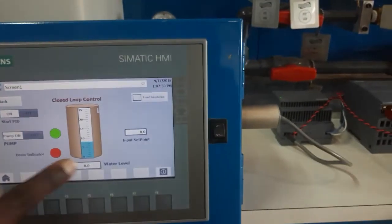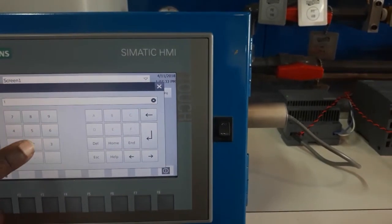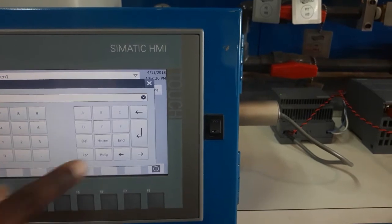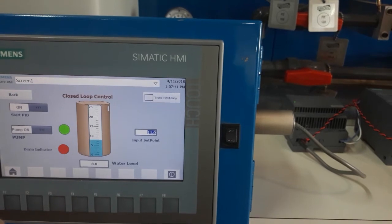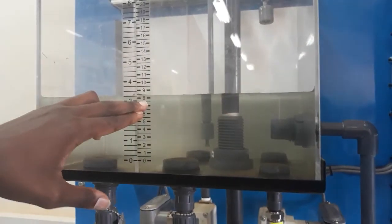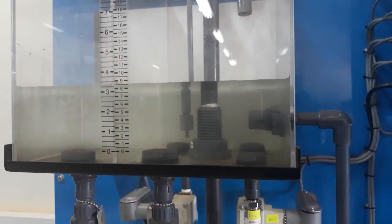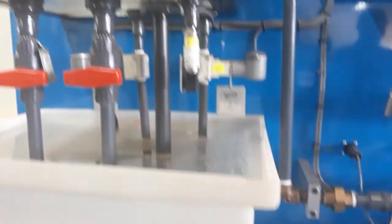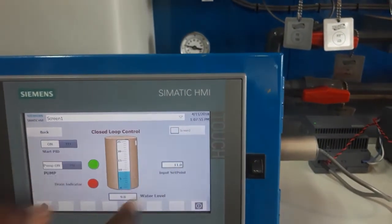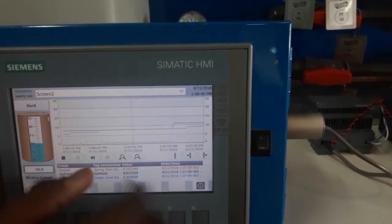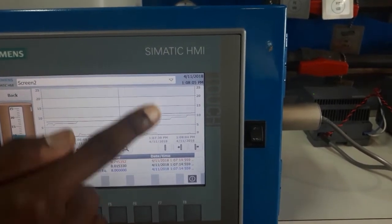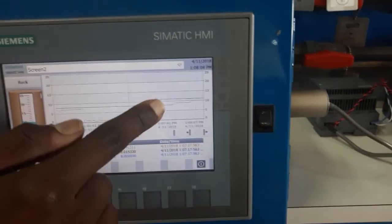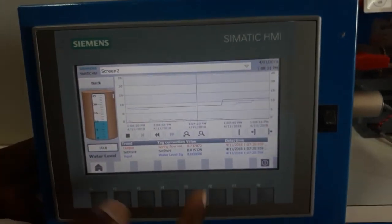Then I can change the setpoint from 8 to 12, or to 11. Then the system realizes that the setpoint has been raised to 11, and it raises the water level from 8 to 11, as it tries to maintain the water level at the new setpoint. You can go ahead and look at the trend. From the trend, you can see the black trend, which is the setpoint, has been shifted from 8 to 11, and the blue trend, which is the water level, is trying to catch up with the black trend.